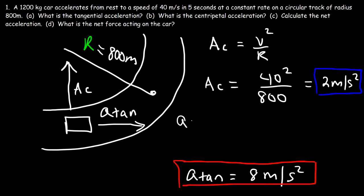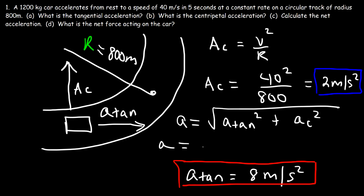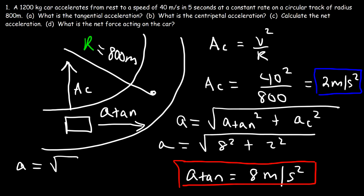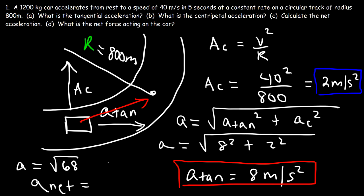To find the net acceleration we use: square root of the tangential acceleration squared plus the centripetal acceleration squared. That's the square root of 8 squared plus 2 squared — which is the square root of 64 plus 4, or the square root of 68. The net acceleration is approximately 8.25 meters per second squared, closer to the tangential acceleration since it is much larger.